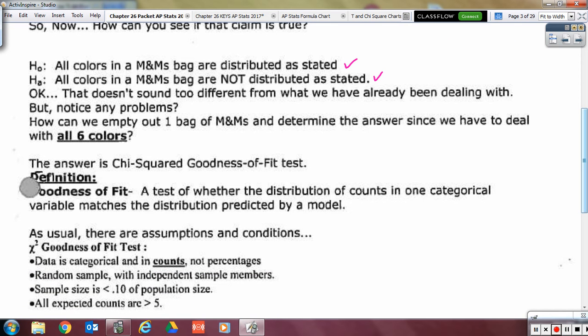That doesn't sound too different from what we have already done. The difference is that this is a statement about all six colors at one time. So the way that we do that is this thing called a chi-squared goodness of fit test. We're seeing how good our sample fits what they say it is supposed to be.